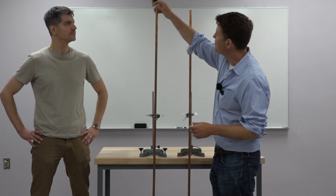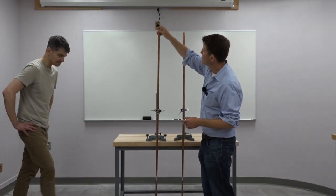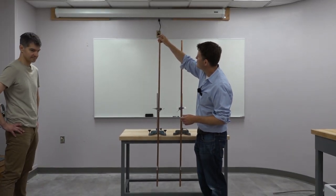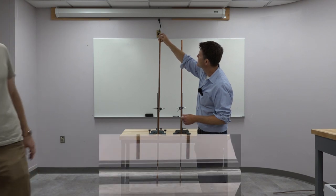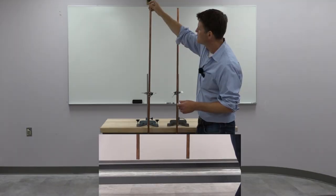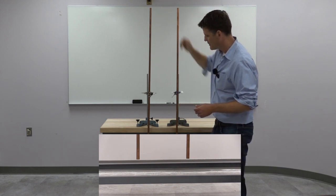But when we drop it in, the only place for the energy to heat the tube up to come from is from the motion of the magnet. And so the kinetic energy of the magnet decreases and it falls very slowly.